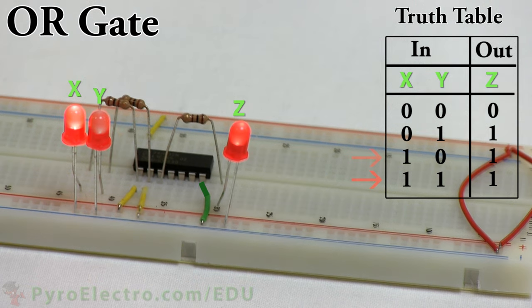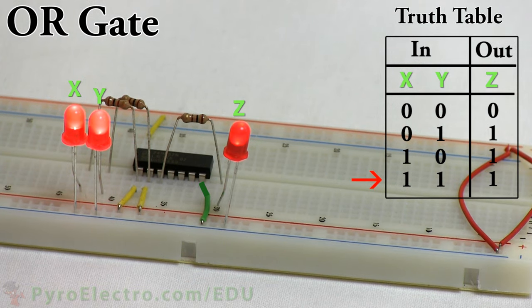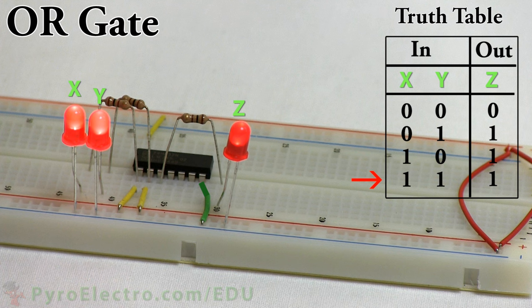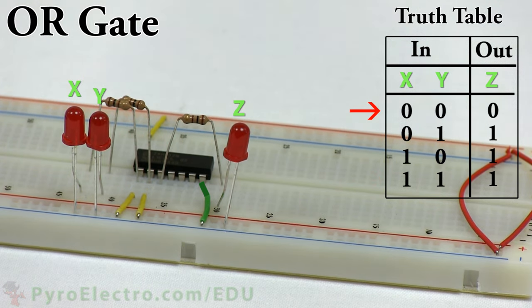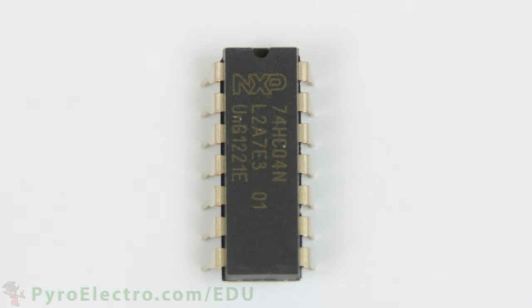And finally, we test when the input is 11. And you can see the output is also a logic 1, represented by the LED being on. Thus, the OR gate follows the theory exactly.